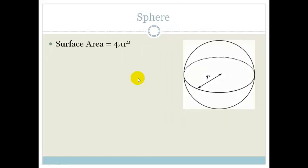Another formula that's not obvious is the surface area of a sphere, which is 4πr², where r is the radius.